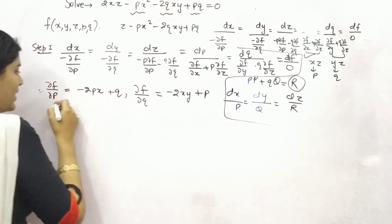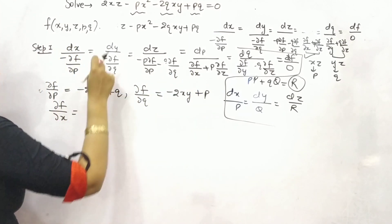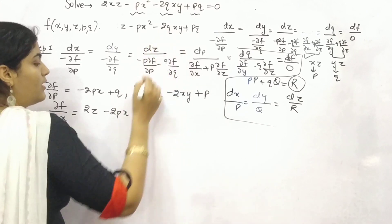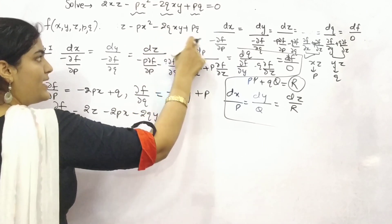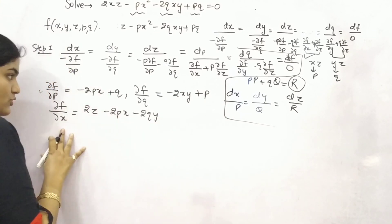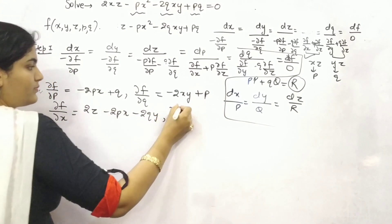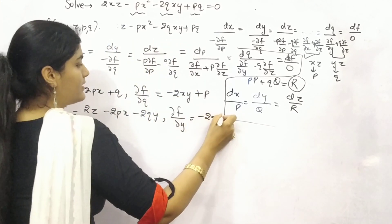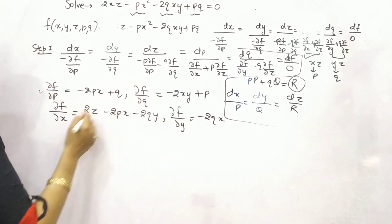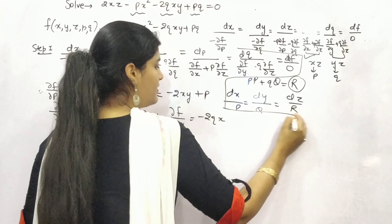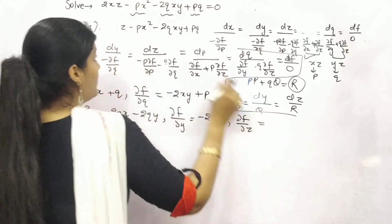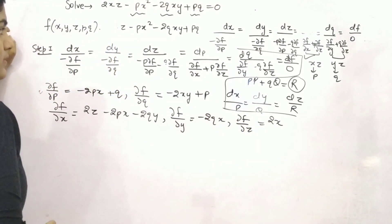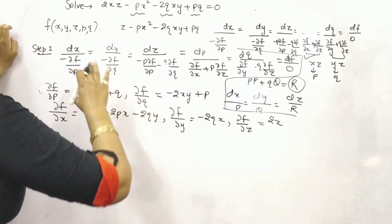Thereafter, what else you want? Now partial differentiation of f with respect to x. So with respect to x, 2z minus 2px minus 2qy. There is no x. So 0. Thereafter, with respect to y. Is there any y? Here, minus 2qx. Then, with respect to z as well. Let me write it here. Is there any z? Yes, 2x. So this is 2x. All right. All set to go.